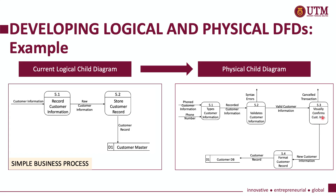The validated customer information then goes to process 5.3, which involves the interface of the system — visually confirming all the customer information to the customer. Only in process 5.4 do we store all of the customer data. So between process 5.1 and 5.2 in the logical child diagram, we have added two more processes to show in detail how the system will react when recording customer information. The physical child diagram gives us a complete system process compared to the simple business process in the logical child diagram.